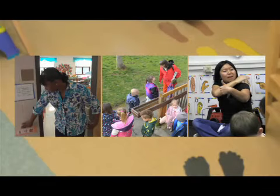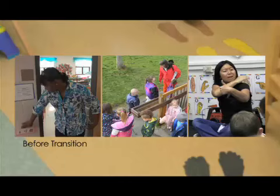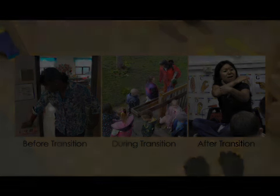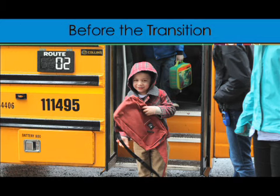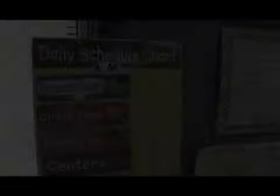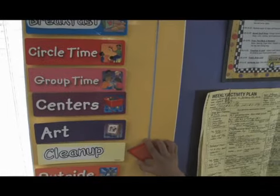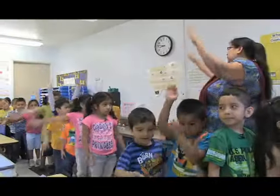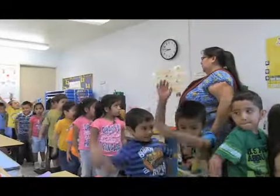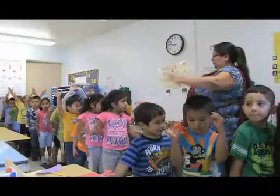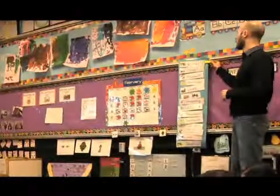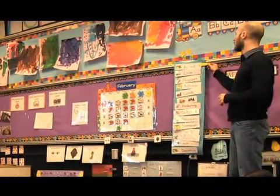To help plan for better transitions, it can be helpful to think about what to do before the transition, during the transition, and following the transition. Plan a daily schedule of activities that minimizes the number of transitions the children need to make, particularly the number of transitions in which all of the children have to do the same thing at the same time. And include your transition plan in your schedule.